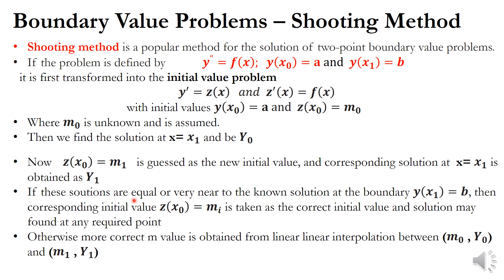If these solutions are very near to the known boundary solution, then the corresponding initial value is taken as the correct initial value, and the solution may be found at any required point using either the Euler method, Runge-Kutta method, or any method for initial value problems. But if y0 and y1 are not near to the exact solution b, then we have to find a more correct m value from these two assumed values by linear interpolation.